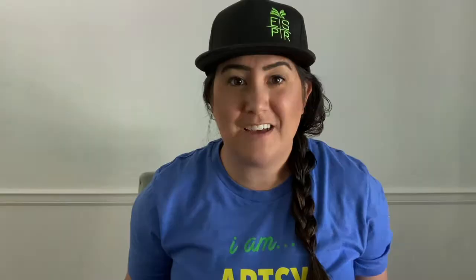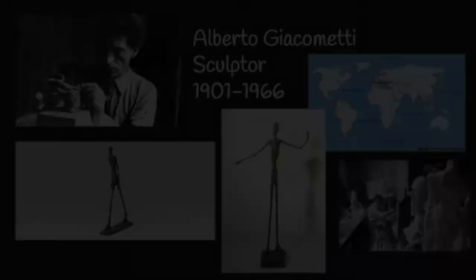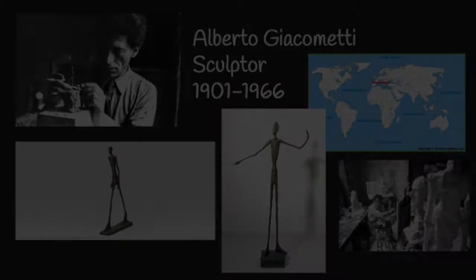Without further ado, let's get started on our lesson — I think you'll really enjoy it. Our artist inspiration for today is Alberto Giacometti, a Swiss sculptor. A sculptor is an artist who creates artwork you can walk around, so it's 3D. He was really inspired by the way shadows looked and interacted with the objects that created them — shadows come from a light source, and he created very long, lanky figures often in an action pose.